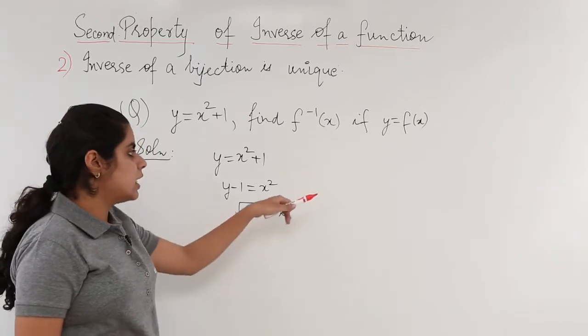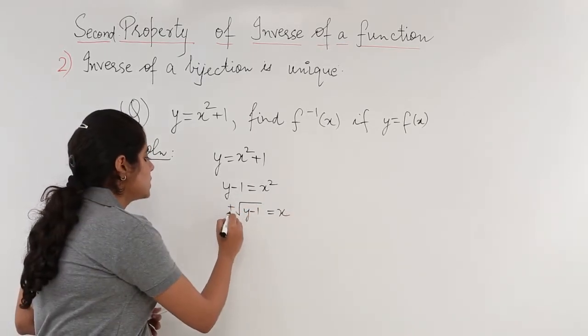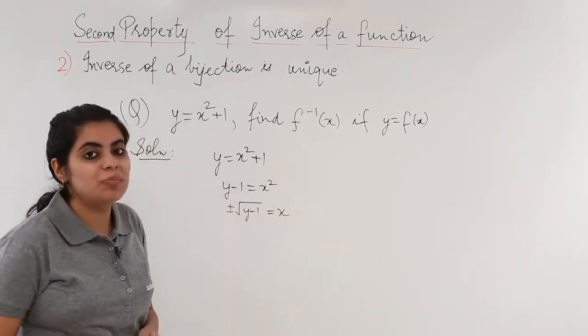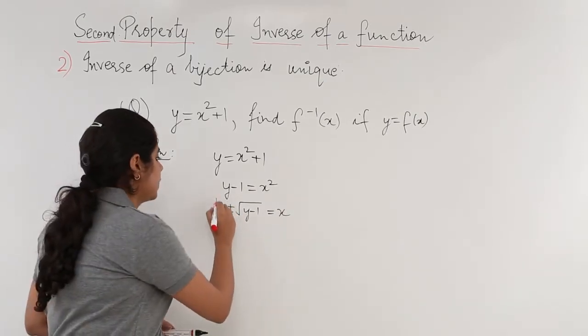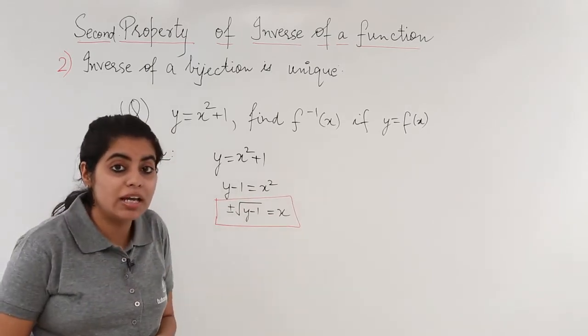But since it is a square and it is a square root, it would be preceded by two signs, plus and minus sign. This value of x we have obtained plus minus under root y minus 1.